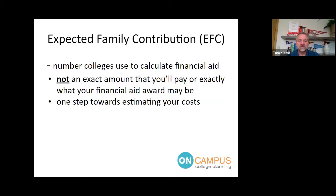The Expected Family Contribution, or EFC, is the number colleges use to calculate financial aid. This is not a final determination of what you're going to pay — it's just one step in the process. You'll go through the FAFSA, the Free Application for Federal Student Aid, the year before your student goes to college and every year thereafter. Colleges all get this EFC number and use it to calculate your potential financial aid.